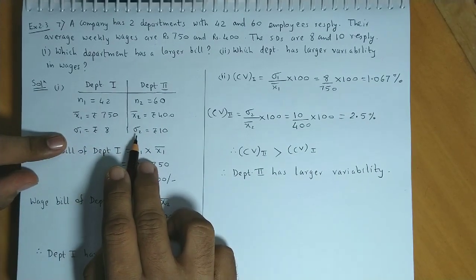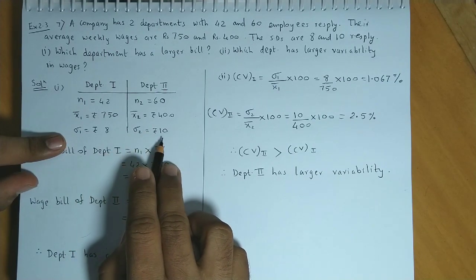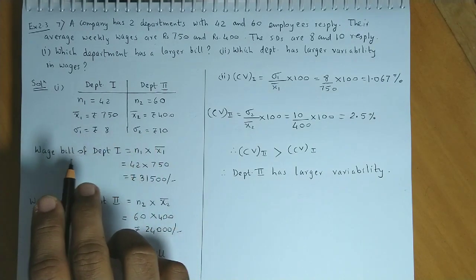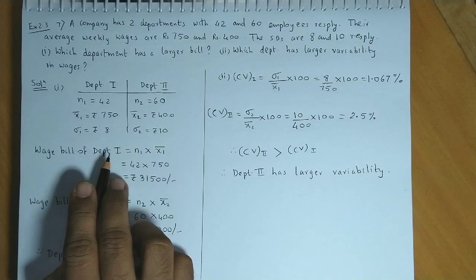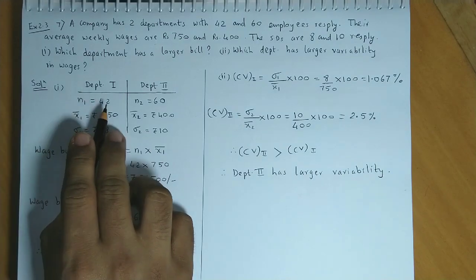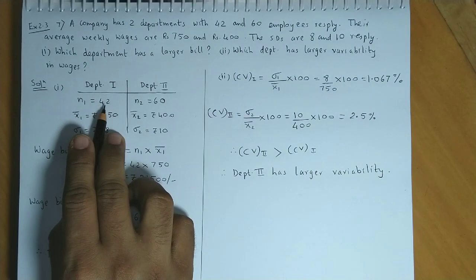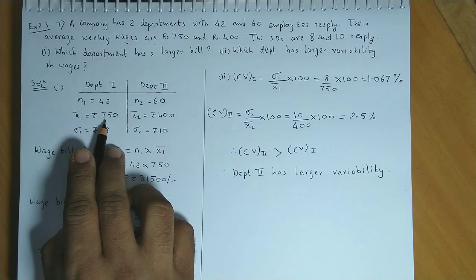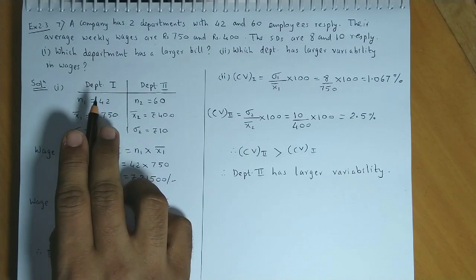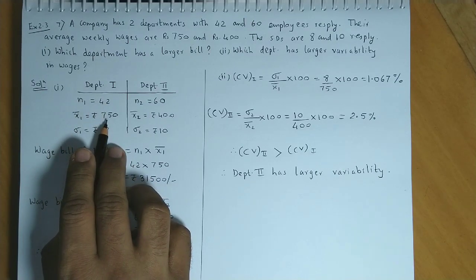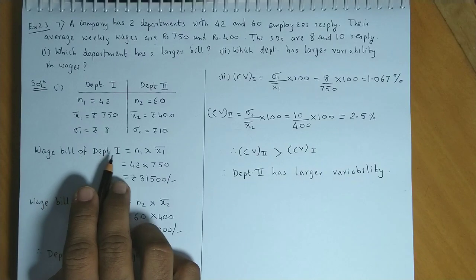Now we'll find the wage bill of Department 1. Department 1 has 42 employees and their average weekly wages is 750, so the total wage bill will be n1 times x1 bar.